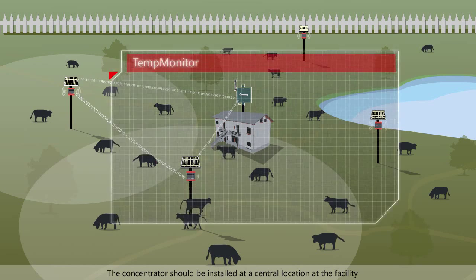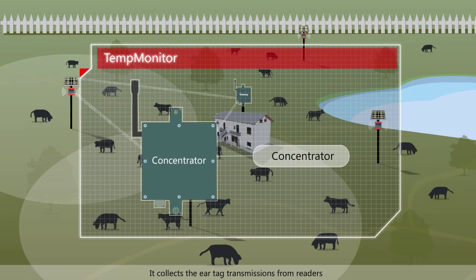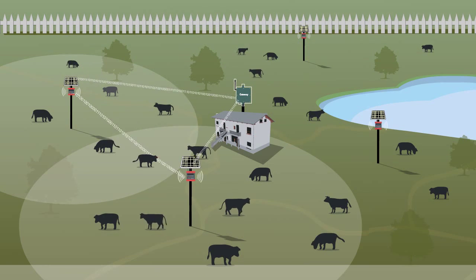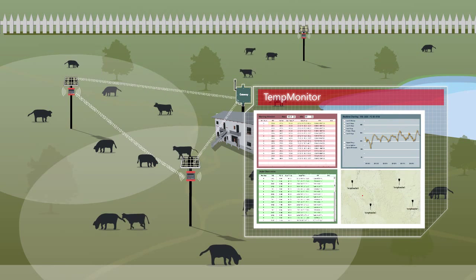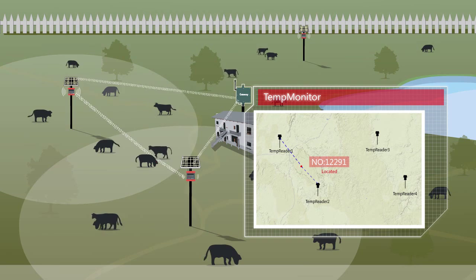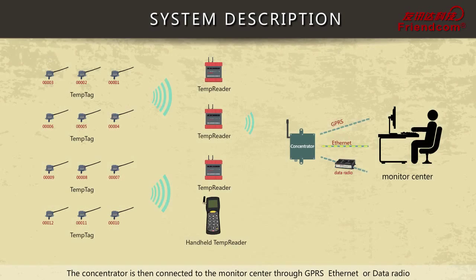The concentrator should be installed at a central location within the facility. It collects the ear tag transmissions from the readers, and is then connected to the monitor center through GPRS, Ethernet, or data radio.